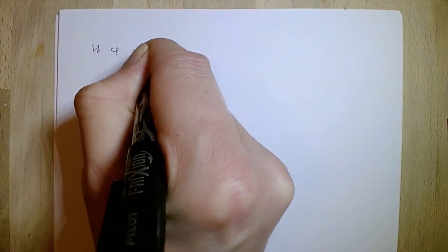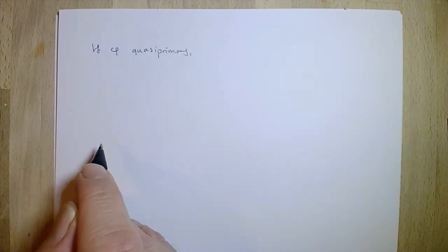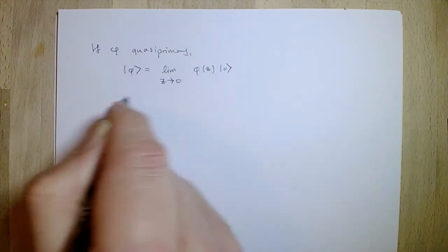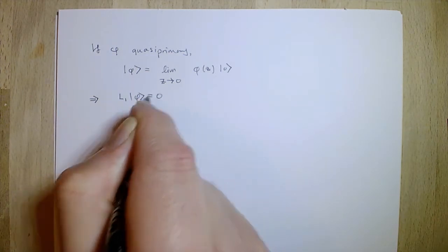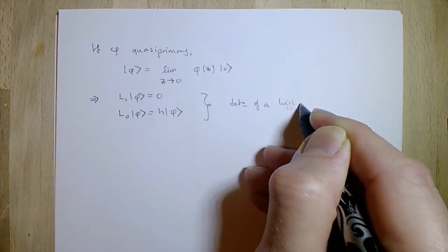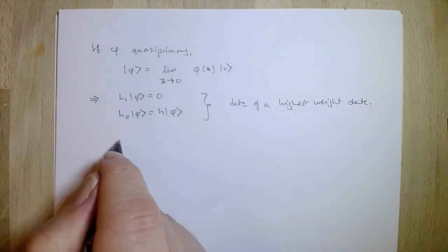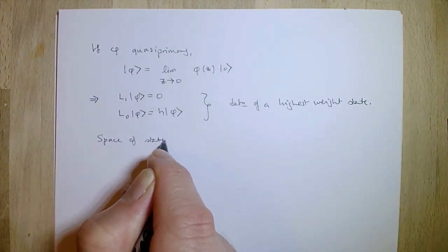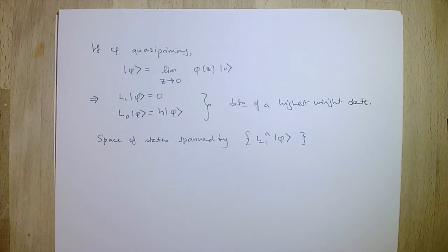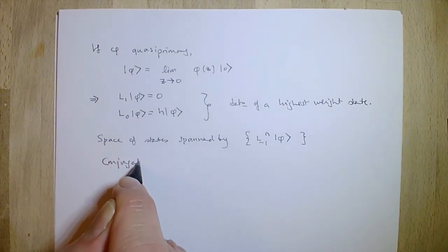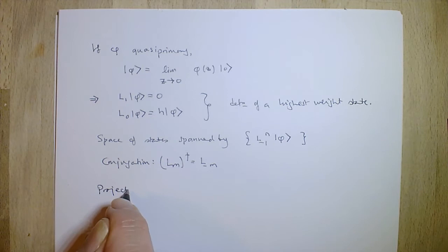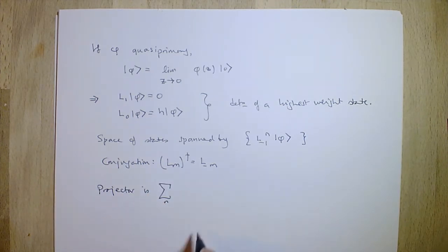If phi is quasi-primary, meaning it satisfies those relations for L_0, L_1, and L_{-1}, then the ket formed by taking the limit of the field phi to the origin satisfies L_1 acting on |phi> = 0 and L_0 |phi> = h|phi>. That's the definition of a highest weight state for the SL(2) algebra. The space of states in this representation is spanned by actions of L_{-1}^n on phi. Using the conjugation L_m† = L_{-m}, we can write the projector onto this representation.